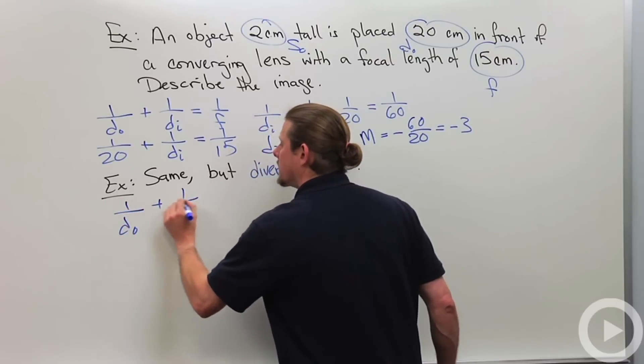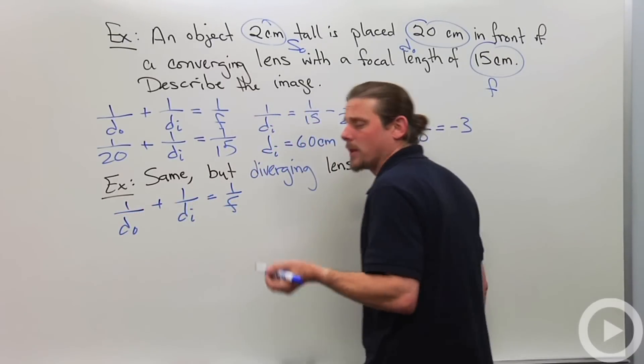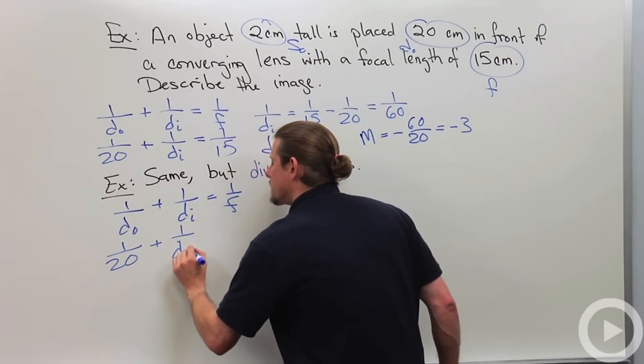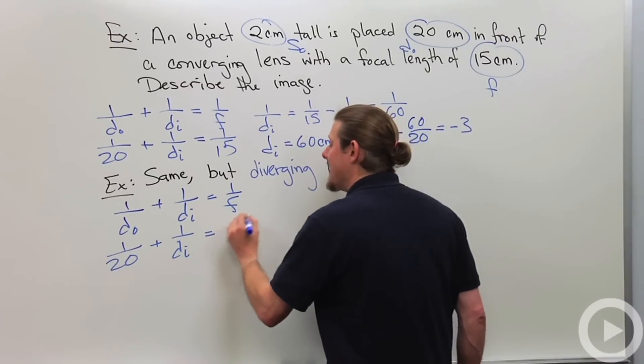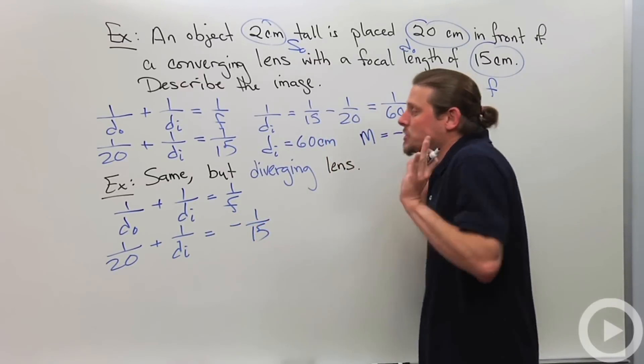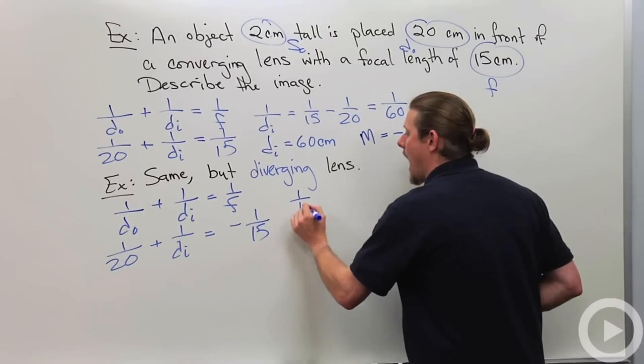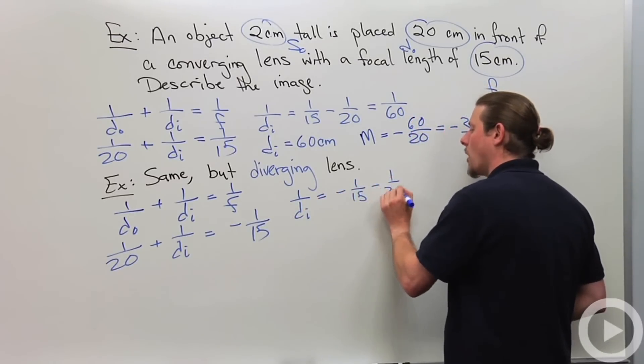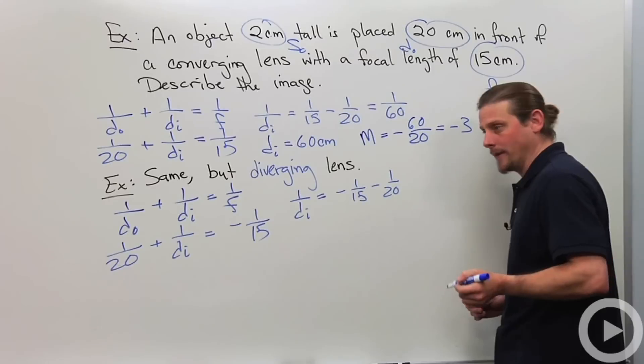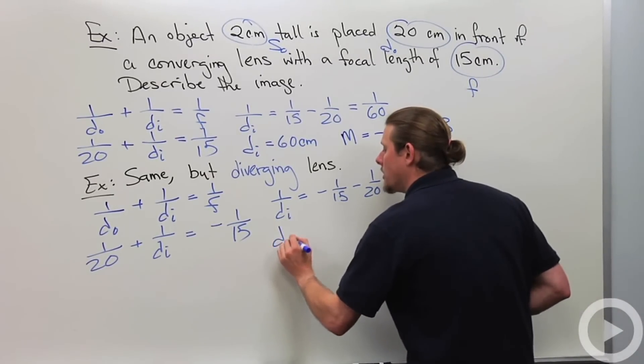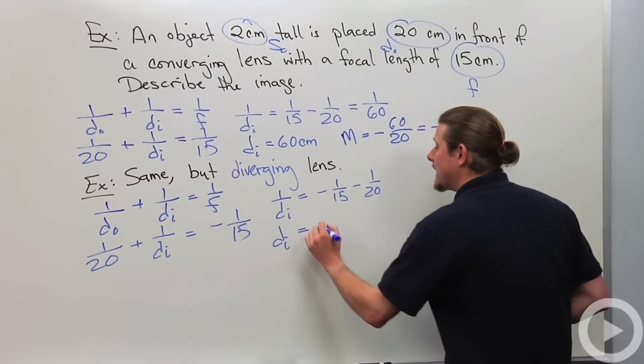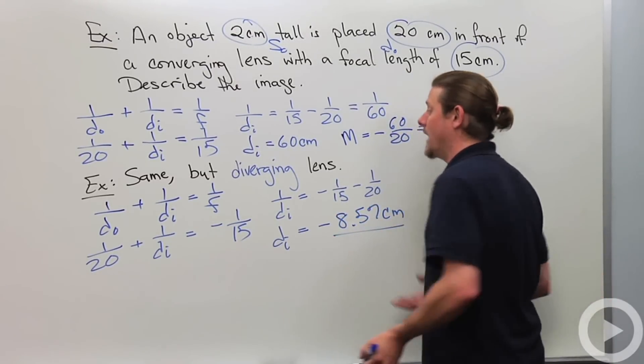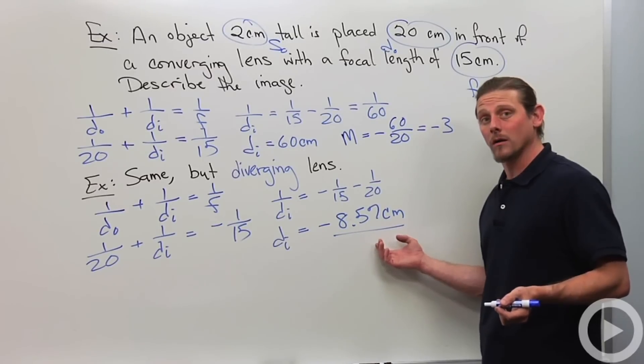So we'll start off with the same equation, but then when we plug in the numbers, it's negative 1 over 15. And that changes everything, because now it's 1 over DI equals negative 1 over 15 minus 1 over 20. So that, if you type it in your calculator, you'll find that DI is negative 8.57 centimeters. Not as nice as it was before.